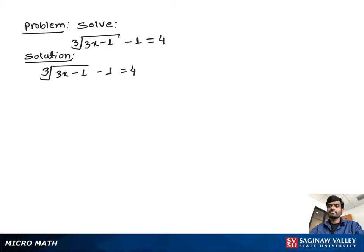In the second step, we move the negative 1 to the other side as a positive 1. So we can write cube root of (3x minus 1) equals 4 plus 1, which is 5.